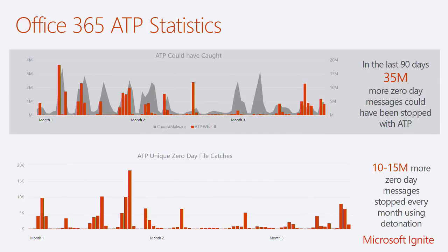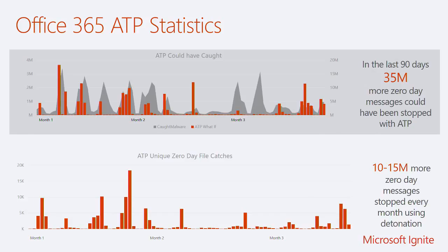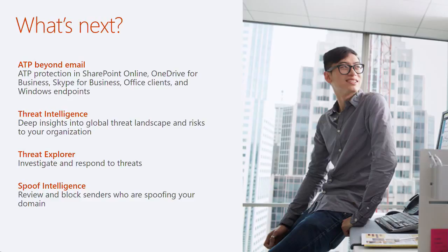We have internal tracking data showing where ATP could have been useful. Over a three-month period, we found that if customers had ATP turned on, we could have caught an additional 35 million zero-day messages, catching 10 to 15 million more zero-day messages per month using detonation. In terms of what's next, ATP started as an email solution sitting behind Exchange Online Protection, but you'll see it expanding into OneDrive for Business and SharePoint Online. Threat Intelligence and Threat Explorer will give you more insight into what's happening with ATP. We also have a spoof intelligence capability live today.